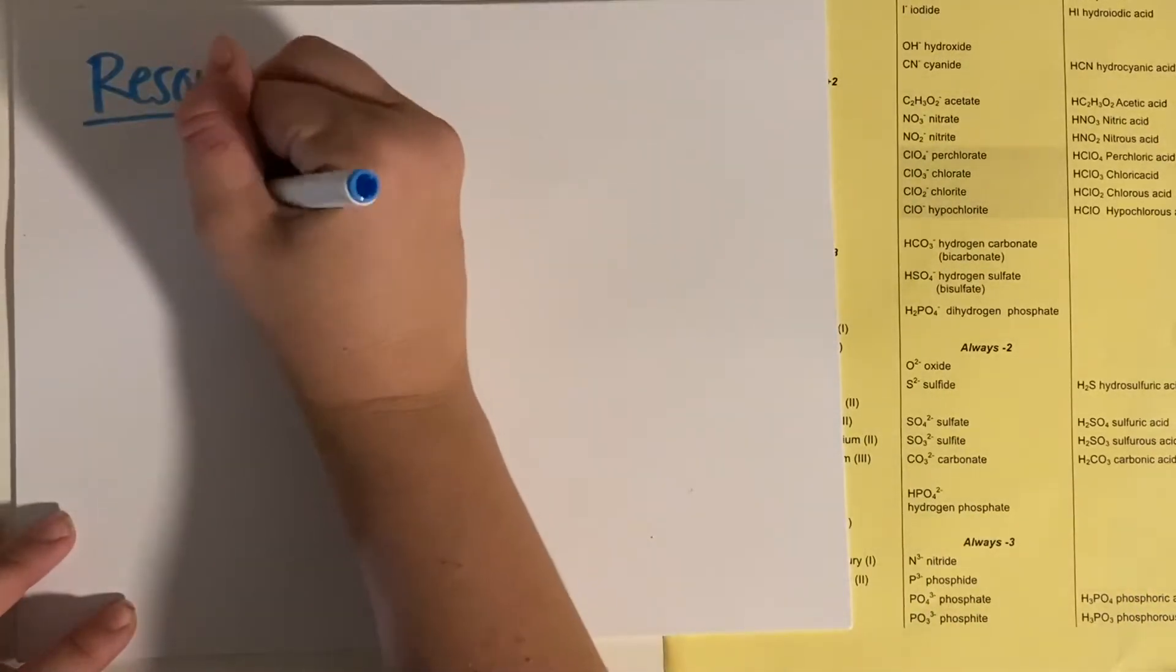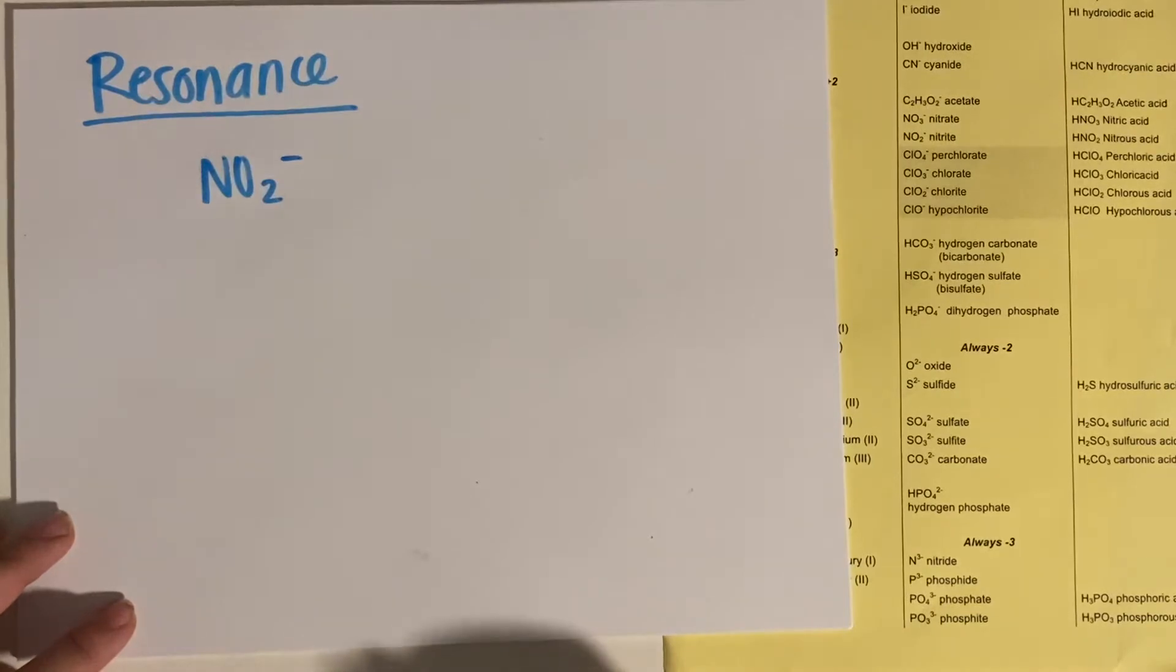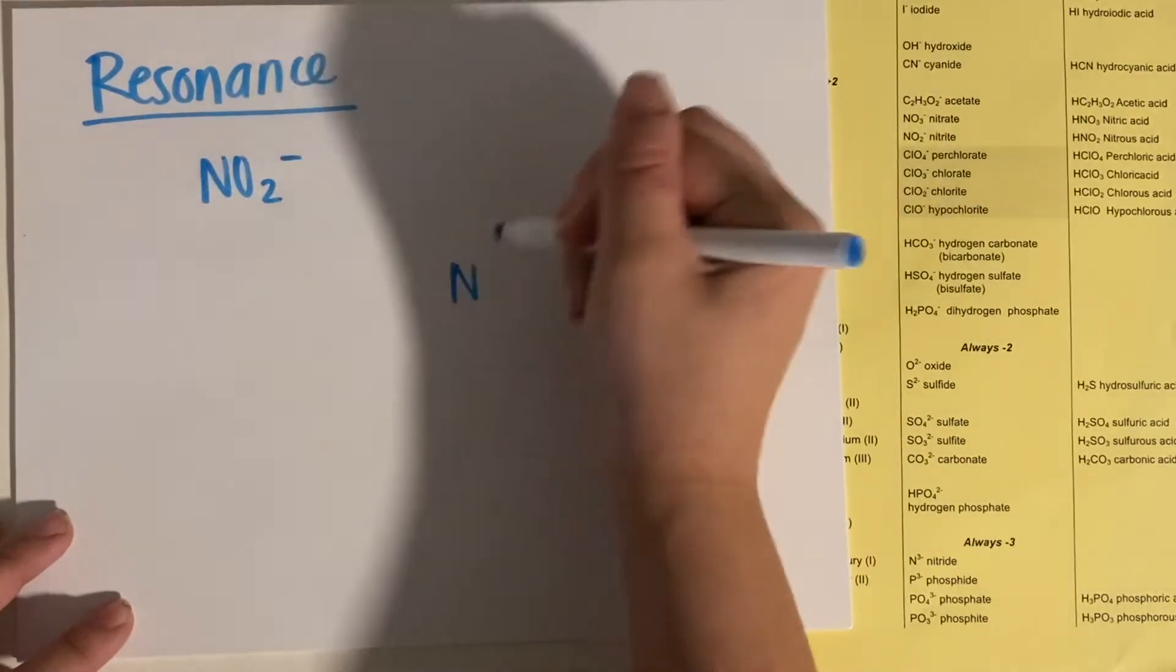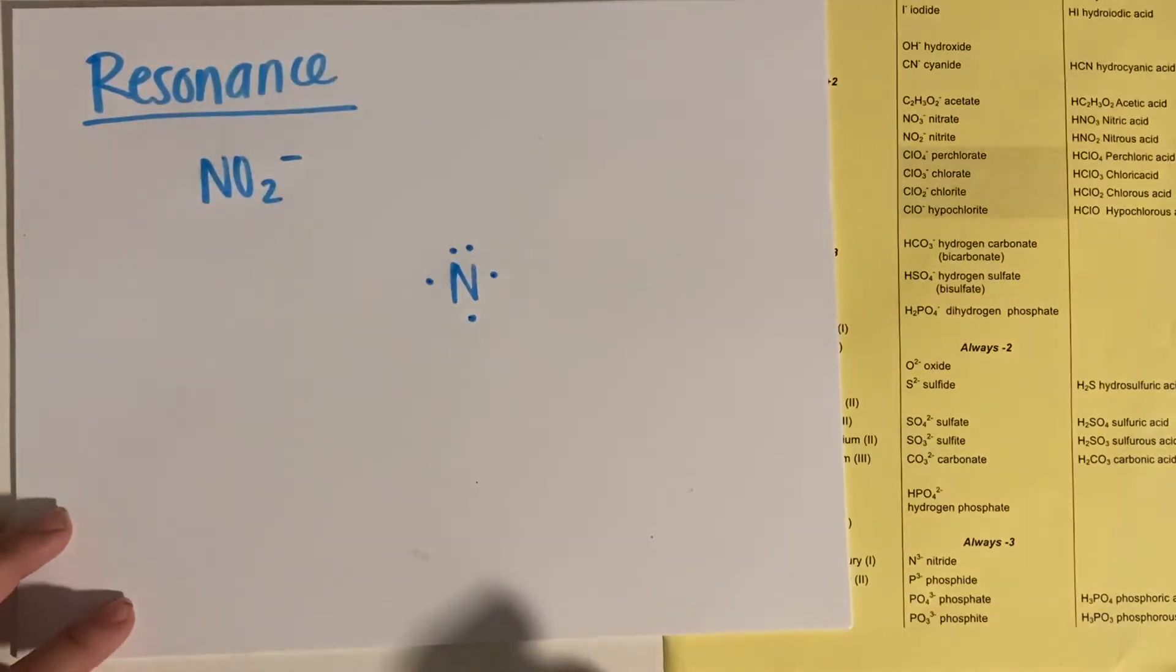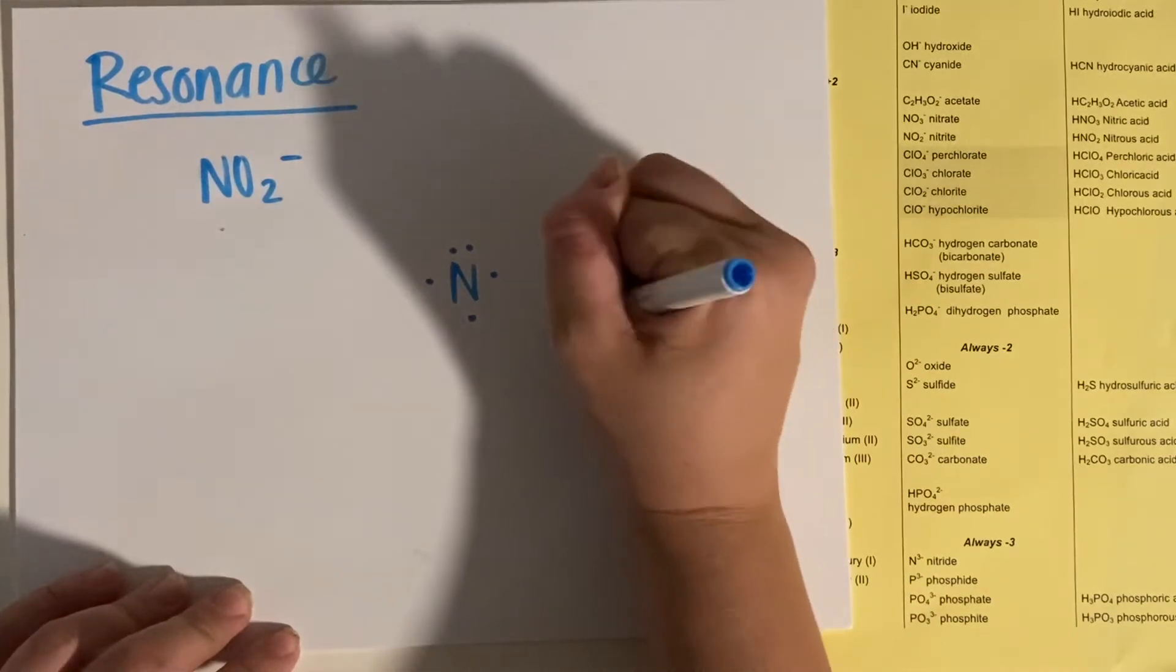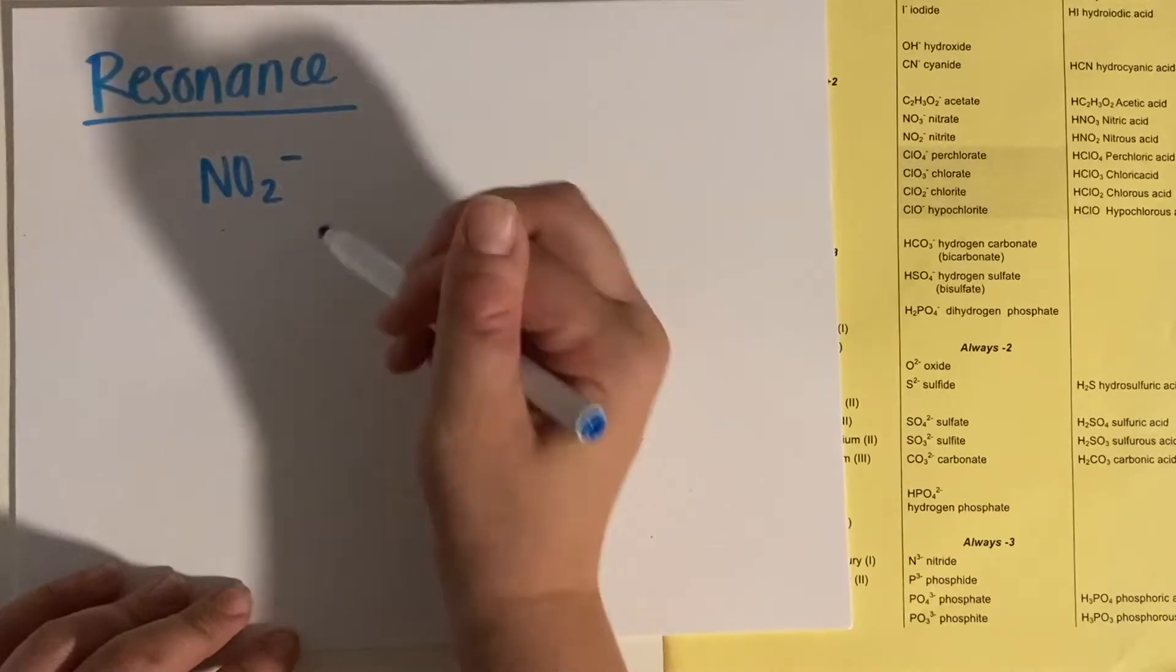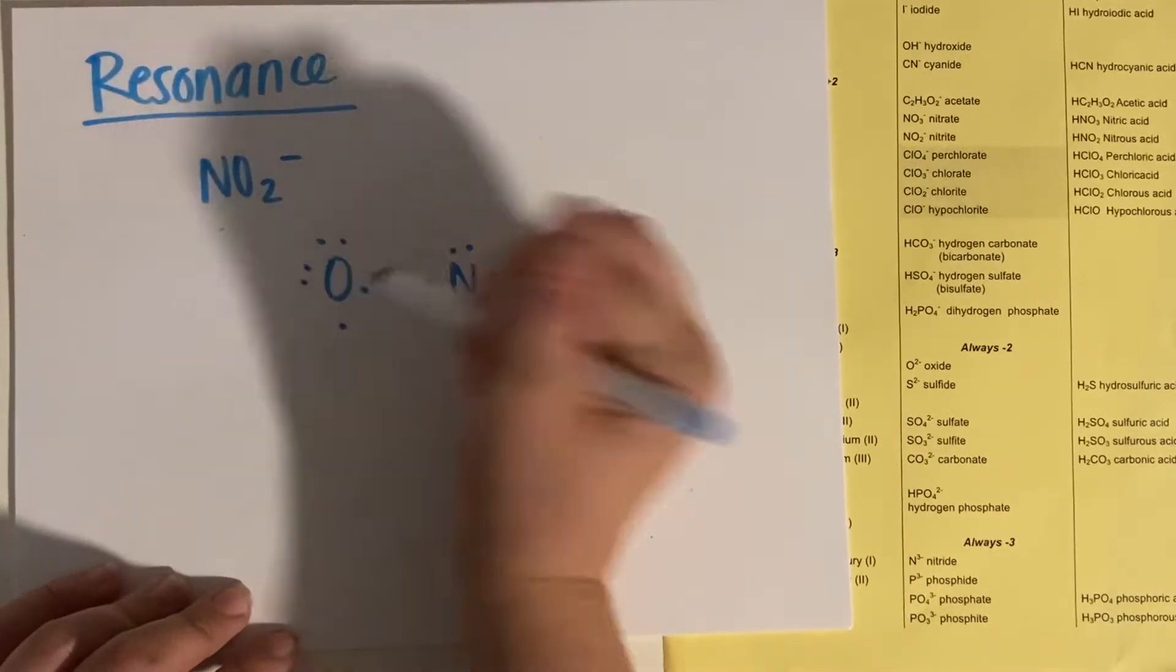And basically, like if you had NO2 minus, and you were supposed to draw the Lewis dot structure for that, you might start drawing it out. Nitrogen has three singles, so that goes in the middle, two oxygens, they each have two singles, so they're going to want to bond twice.